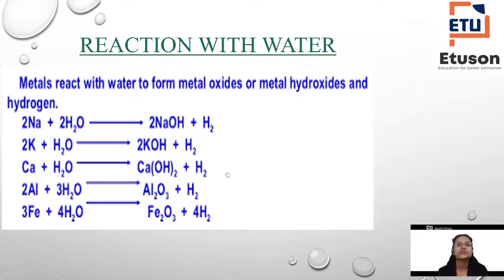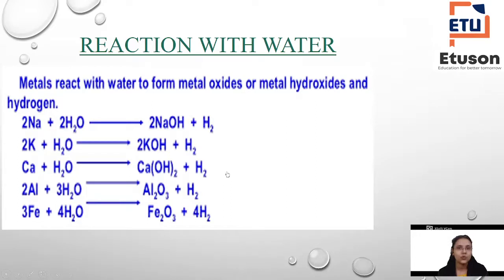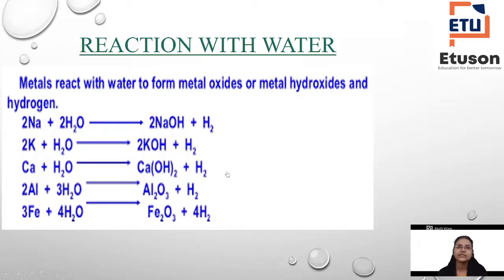For aluminium and iron, we get oxides rather than hydroxides. Aluminium reacts with water to give aluminium oxide (Al2O3) plus H2. Iron reacts with water to give ferric oxide or ferrous oxide plus hydrogen. So either metal oxide or metal hydroxide comes out along with hydrogen gas.